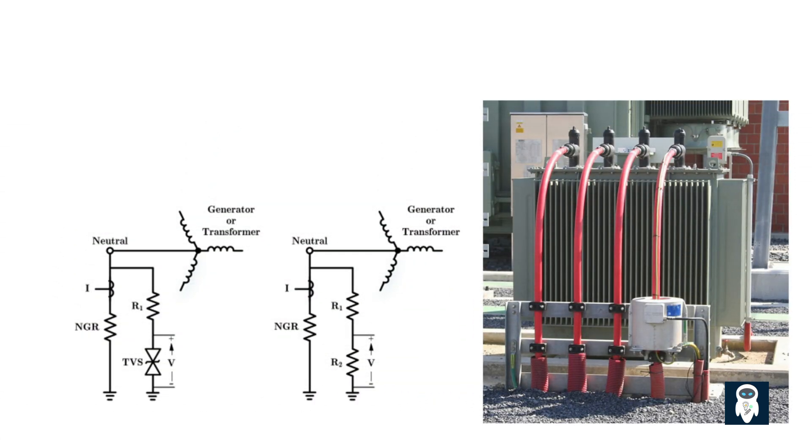The third reason for using a neutral grounding resistor is fault detection. Neutral grounding resistors can provide valuable information about the occurrence and location of faults in a power system. When a fault occurs, the neutral grounding resistor experiences a voltage drop due to the fault current flowing through it. Monitoring this voltage drop across the neutral grounding resistor allows us to detect and locate faults accurately. By analyzing the voltage signal, engineers can identify the faulted phase or section of the power system, enabling swift corrective actions to be taken. This helps in reducing downtime and improving the overall reliability of the electrical grid.